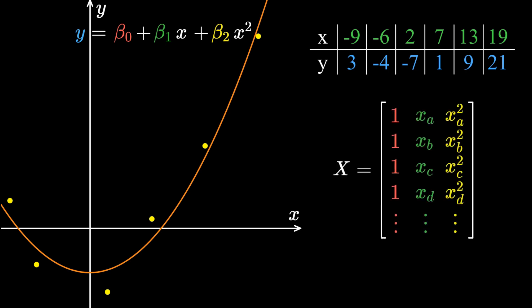The trick is to put the square of each x coordinate into the third column of our data matrix. This essentially makes x squared a second independent variable apart from x itself. Then we can solve for the normal equations as usual.